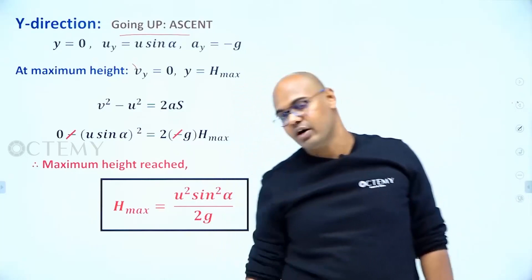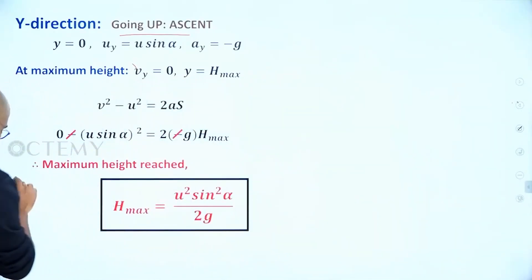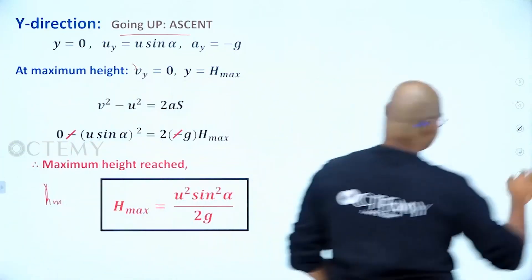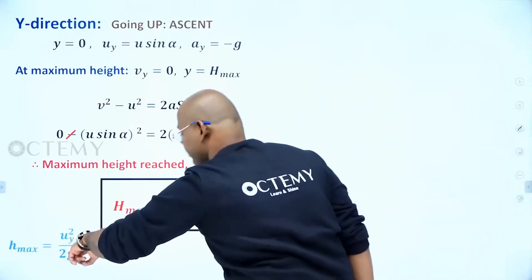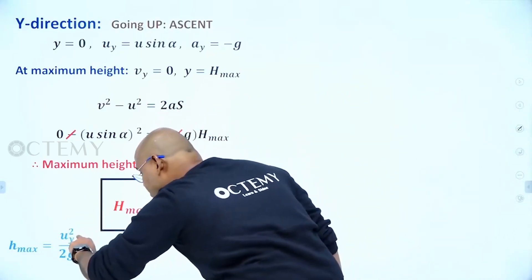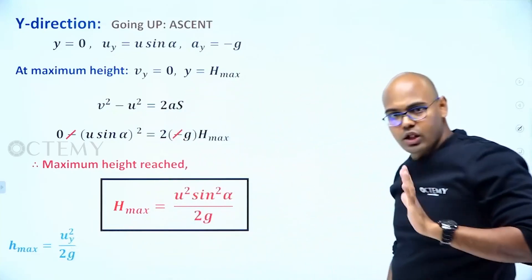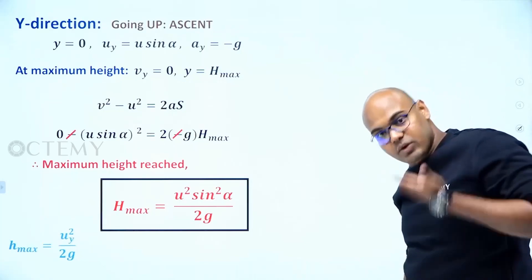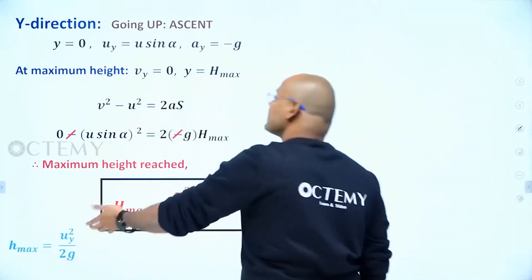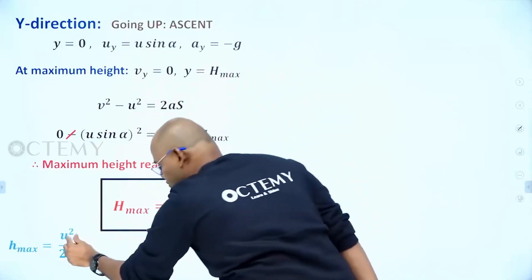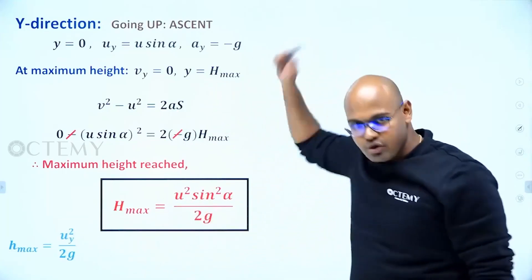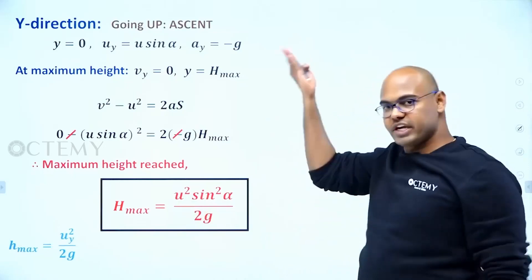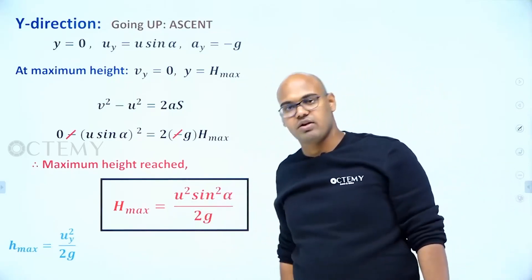Yesterday I derived maximum height h max = u² / 2g for vertical projection. Now I have split the velocity, so in the vertical direction the initial velocity is uy = u sin alpha. Substituting: h max = (u sin alpha)² / 2g = u² sin²alpha / 2g. If you remember yesterday's formula u² / 2g — instead of projecting up with u, I projected with u sin alpha, so it becomes u² sin²alpha / 2g.